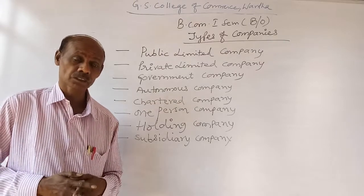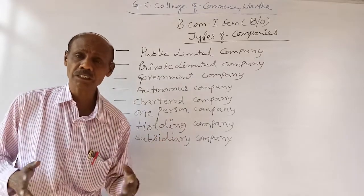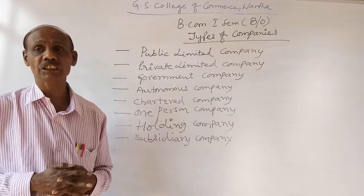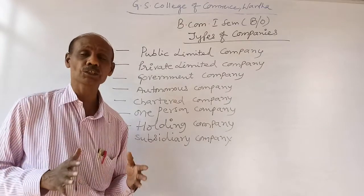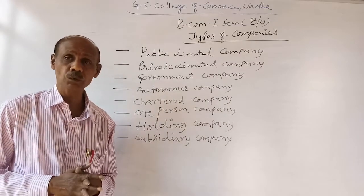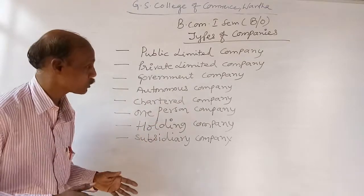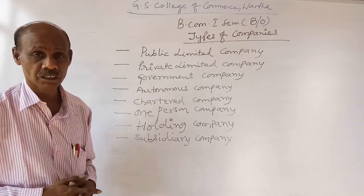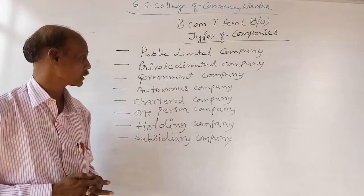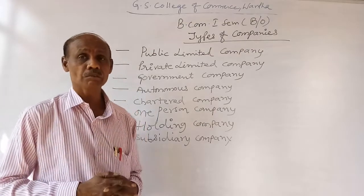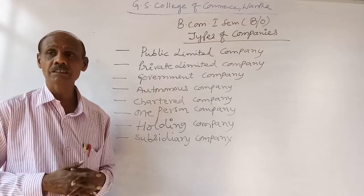In the case of the 1956 Industrial Policy, companies were categorized into three categories: Schedule A, Schedule B, and Schedule C companies. Schedule A companies are fully owned, managed, and controlled by the central government. Schedule B companies are fully owned, managed, and controlled by both central and state governments. Schedule C companies come from the private sector. Any company formulated, controlled, managed, and operated by the government is named a government company.